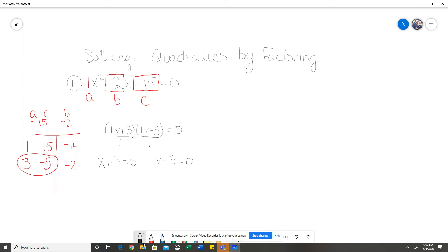So, by setting each of these equal to 0, we can find out what's going to make each product, or each factor, 0. So, x plus 3 equals 0. I'm going to subtract 3 from both sides and get x equals negative 3. x minus 5 equals 0. I'm going to add 5 to both sides and get x equals 5. So, my solution set is negative 3 and 5.